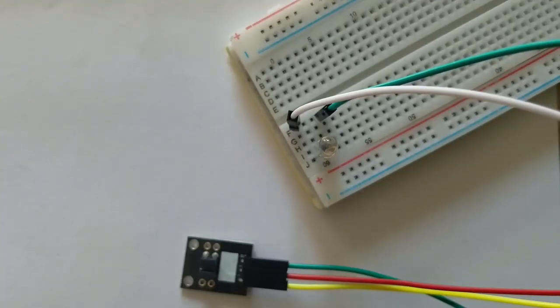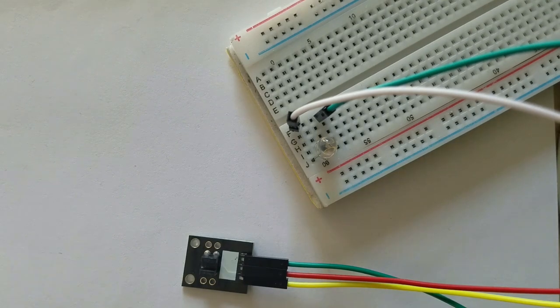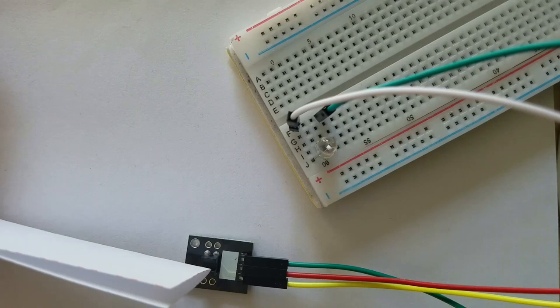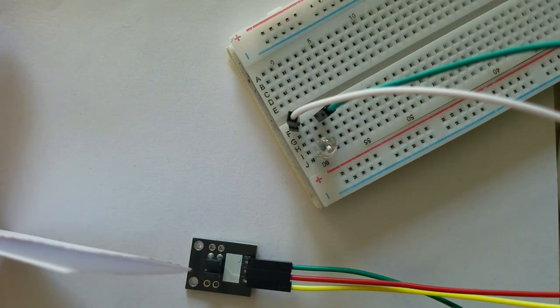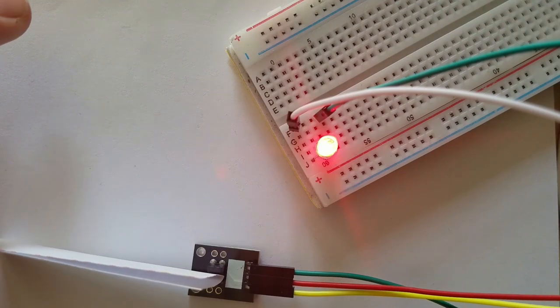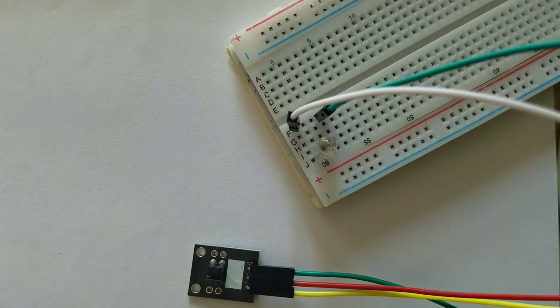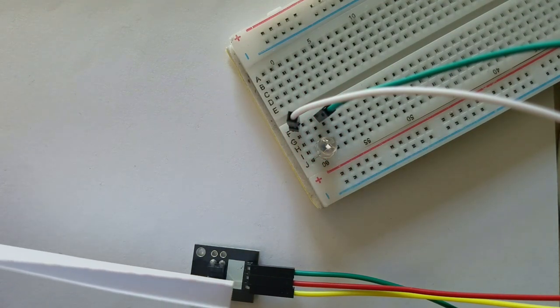This module has on board the photo interruptor, which is a photo sensor that integrates light emitting elements and light receiving elements into a single package. This device will turn the circuit optically on or off.